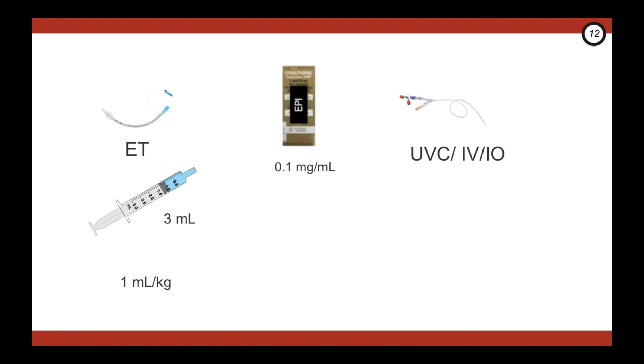Once you've established access, draw epi in a 1 ml syringe, and note the difference between the ET tube epi, and give 0.1 mls per kilo with a 0.5 to 1 ml normal saline flush.